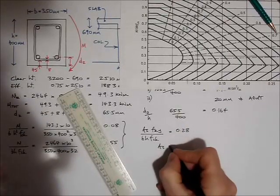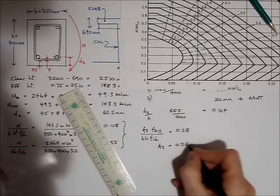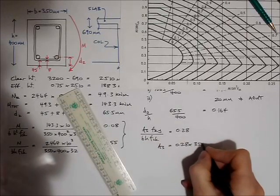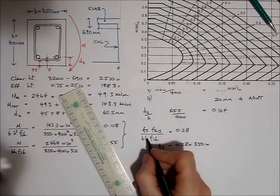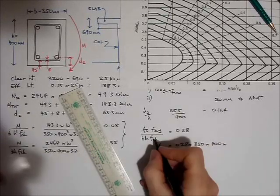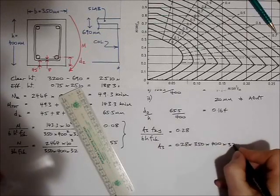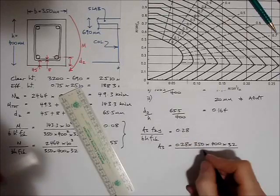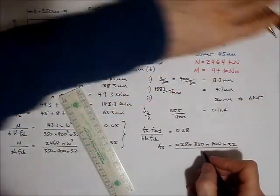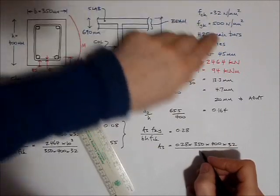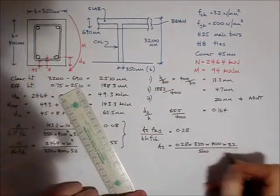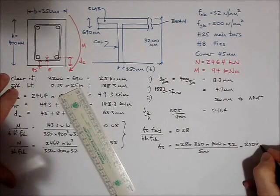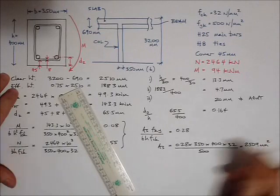So from that I can work out what area of steel I need. It's 0.28 times b, which is 350, times h, which is 400, times F C K, which is 32, divided by the strength of the steel, which is 500 newtons. Well, this comes out to be 2509 millimeters squared.